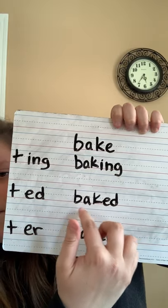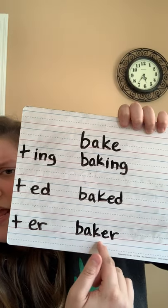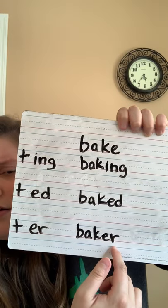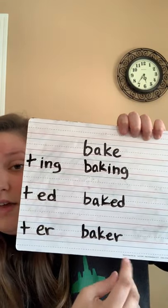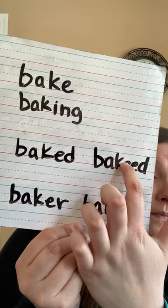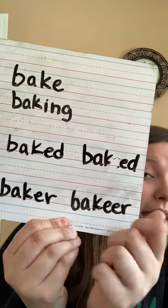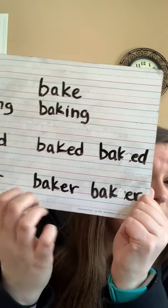Some of you may look at this and think, 'I see the word bake, they just added a D,' or 'I see the word bake and they just added an R.' But we actually dropped this E and added ed and er. If we didn't drop that magic E, it would have two Es and it would look like this. We want to drop that magic E — drop that magic E and add ed, drop that magic E and add er — it becomes baked and baker.